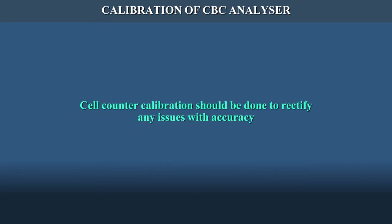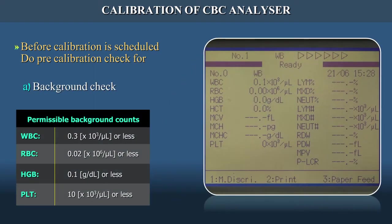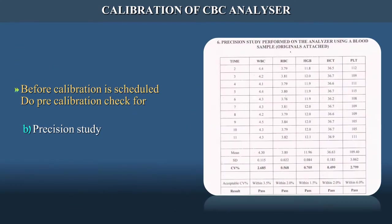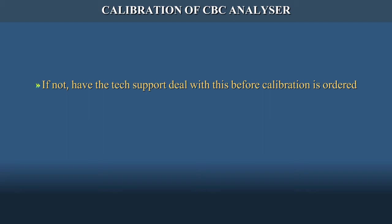A cell counter calibration should be done to rectify any issues with accuracy. Before calibration is scheduled, do a pre-calibration check: background check should be within acceptable limits, precision study, and carryover. Carryover is the residue of a previous test that can affect subsequent tests; if not acceptable, have tech support deal with this before calibration is ordered.